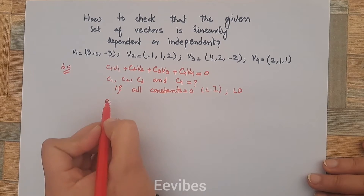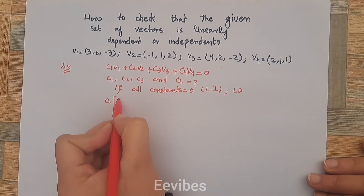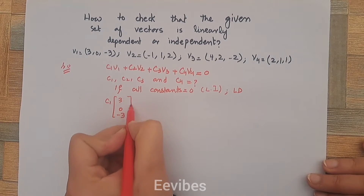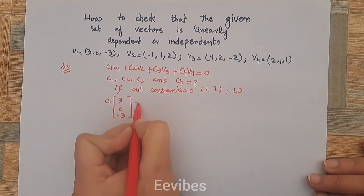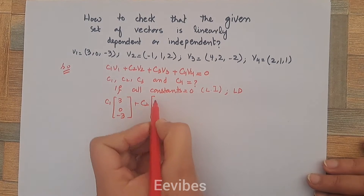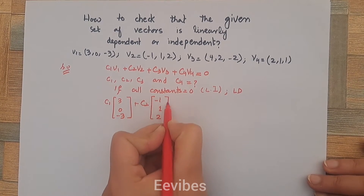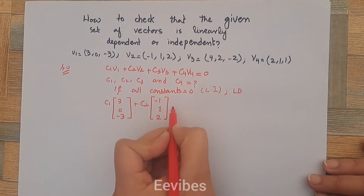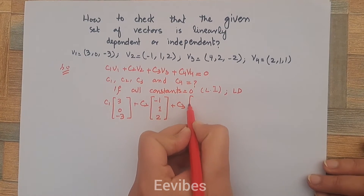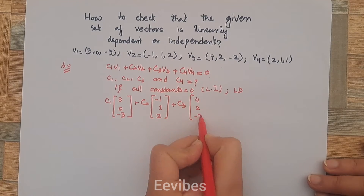I will write c1 and substitute the value of v1, which is (3, 0, -3), plus c2 times v2, which is (-1, 1, 2), then plus c3 times v3, which is (4, 2, -2).